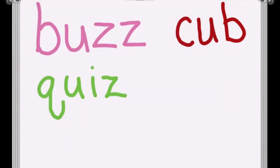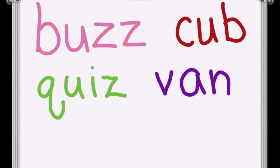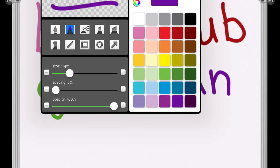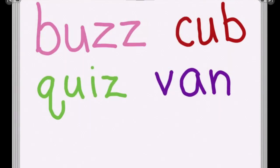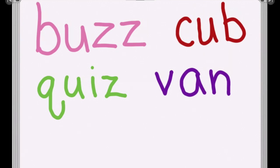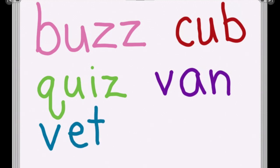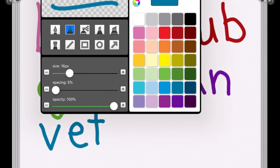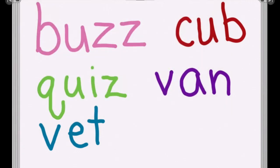Write 'van': V... eh... N. Write 'vet': V... eh... T. Write 'yum': Y... uh... M.